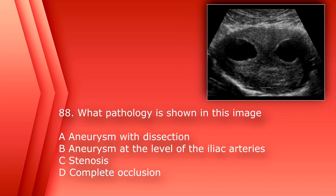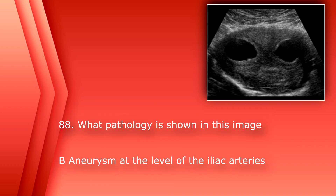Number 88: what pathology is shown in this image? A. Aneurysm with dissection. B. Aneurysm at the level of the iliac arteries. C. Stenosis. Or D. Complete occlusion. The answer is B. Aneurysm at the level of the iliac arteries.